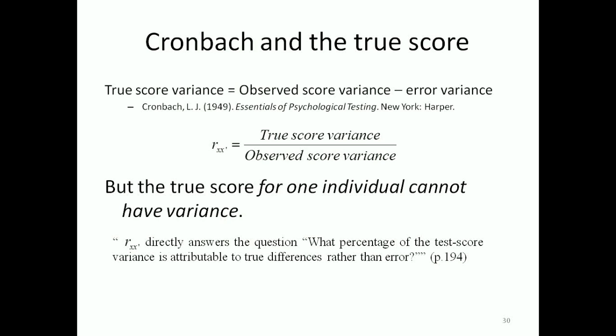And another failure here which is quite obvious is Cronbach himself argues that this shows us what percentage of the test score variance is attributable to true differences rather than error. Well that's okay if we have one variance over another variance because we know that variances can't be negative. But what happens is we know that alpha can be negative. Now there's a problem here which is very large.